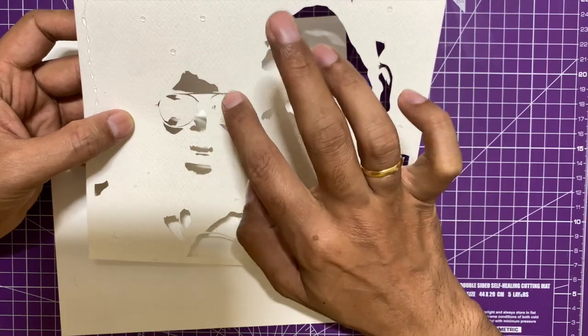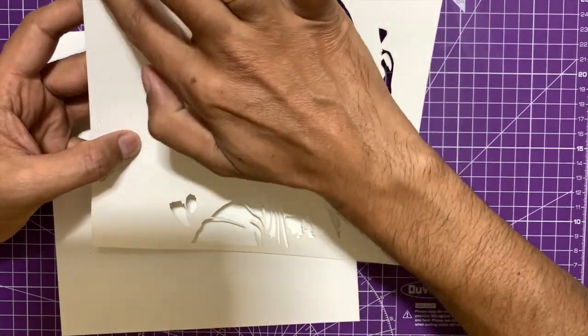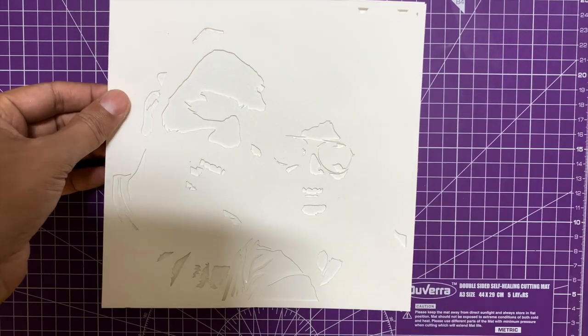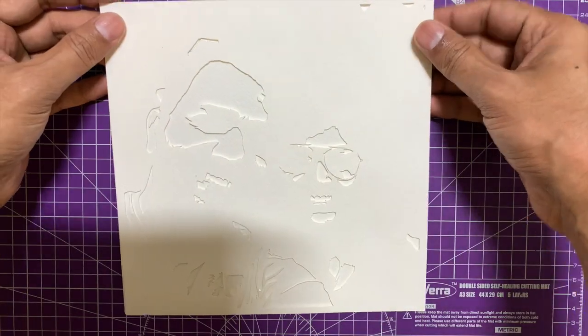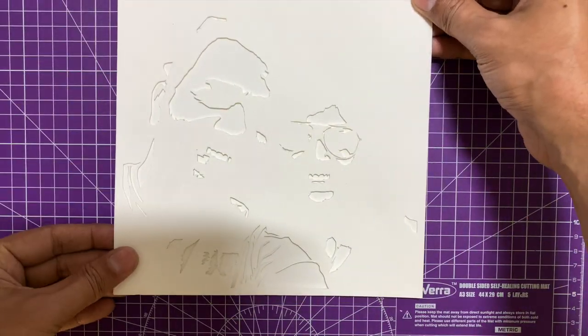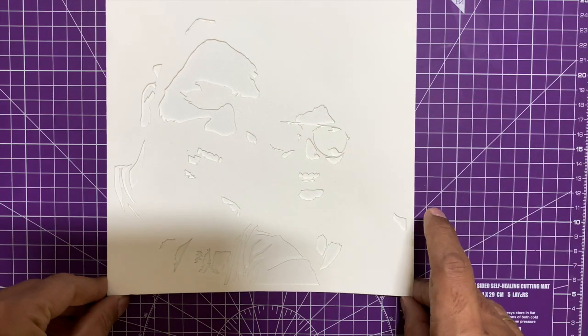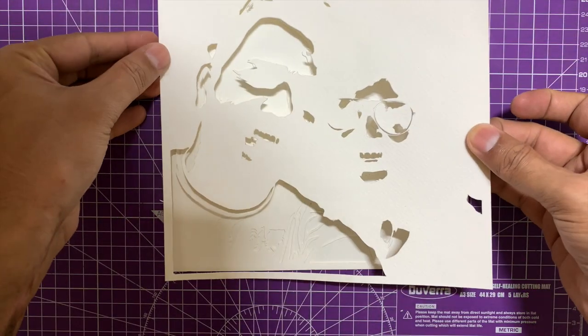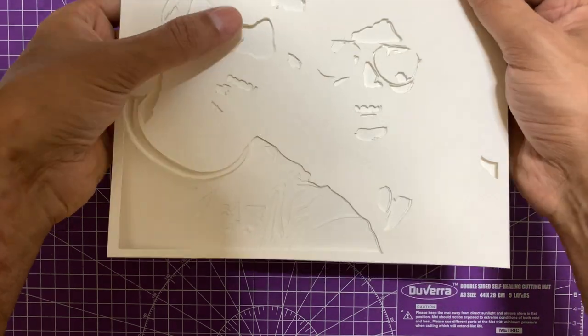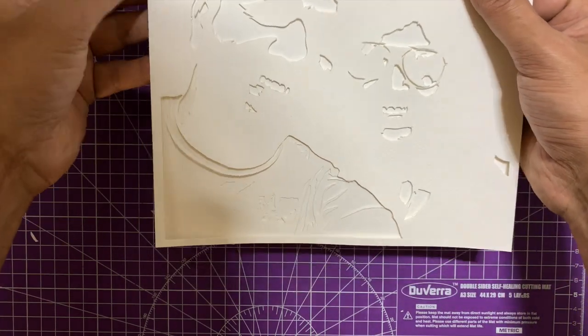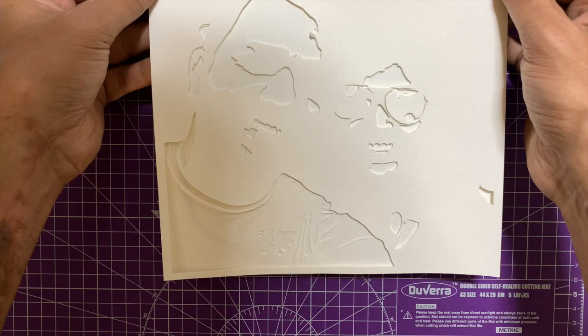I'll simply apply glue at various places throughout the layer on the backside of the layer, and then simply paste that layer on top of the previous layer. So I'm going to paste layer number two on top of layer number one. And in the same fashion, I'm going to do it for layer number three also, except for one isolated piece, which I'll show you how to do.